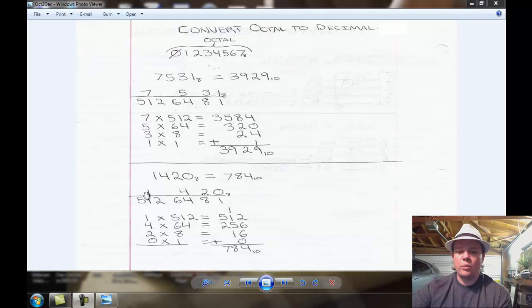Come down here, 1420 base 8. We start at 1, 1 times 512 equals 512. 4 multiplied by 64, 256. 2 multiplied by 8, 16. And 0 multiplied by 1. Generally, I wouldn't even write that down, but for the sake of learning, I wrote it here.